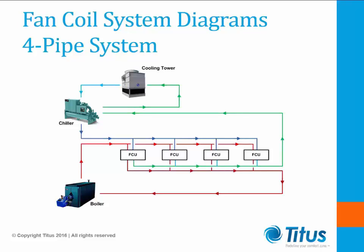A four-pipe system consists of two supply pipes, one for cold water and one for hot water, and two return water pipes. The system is further categorized as an independent load or a common load system. The independent load systems have two separate water coils, one served by hot water and the other by cold water, and make use of two-way on-off valves. Common load systems can have a single coil in the fan coil but still be supplied independently with four-pipe systems, making use of three-way diverting valves.